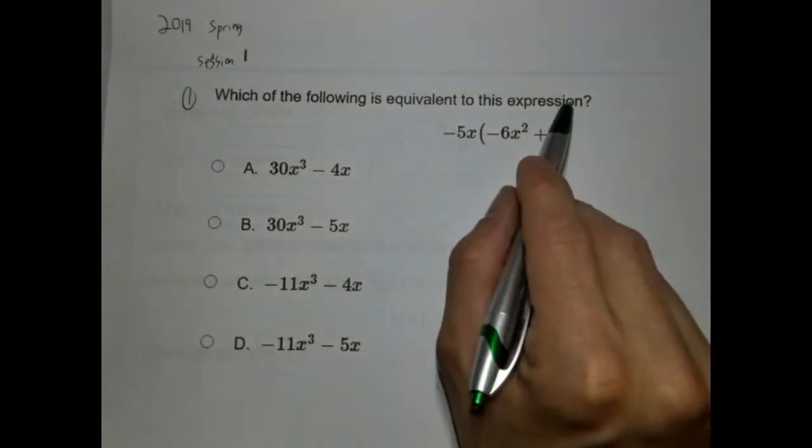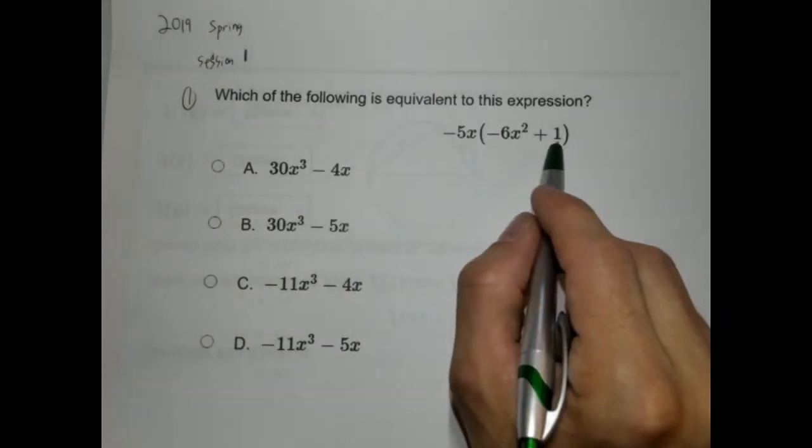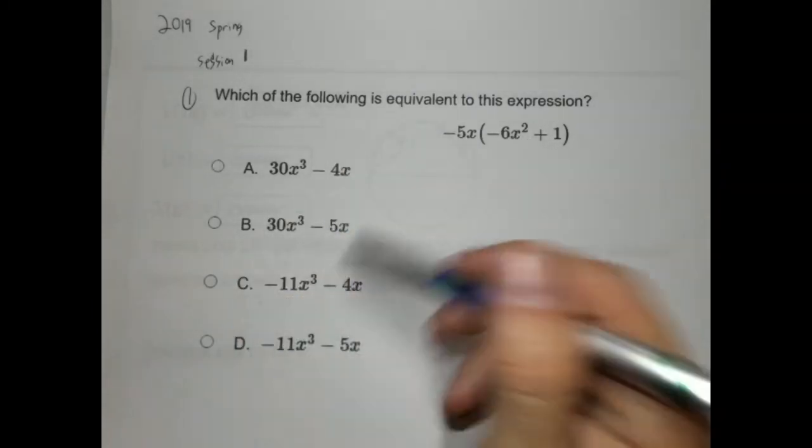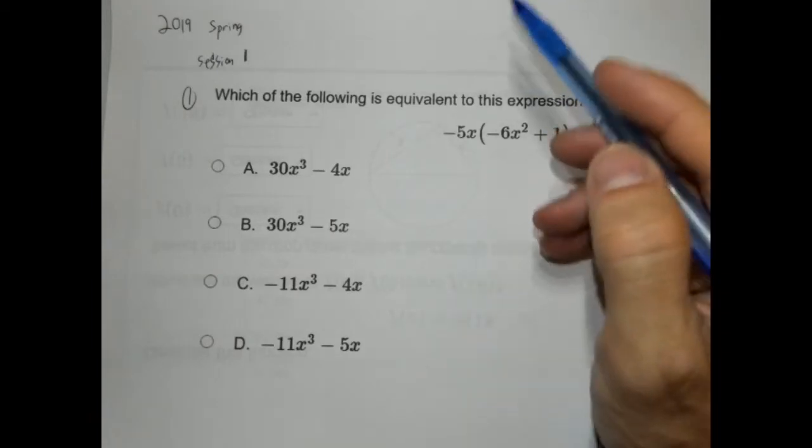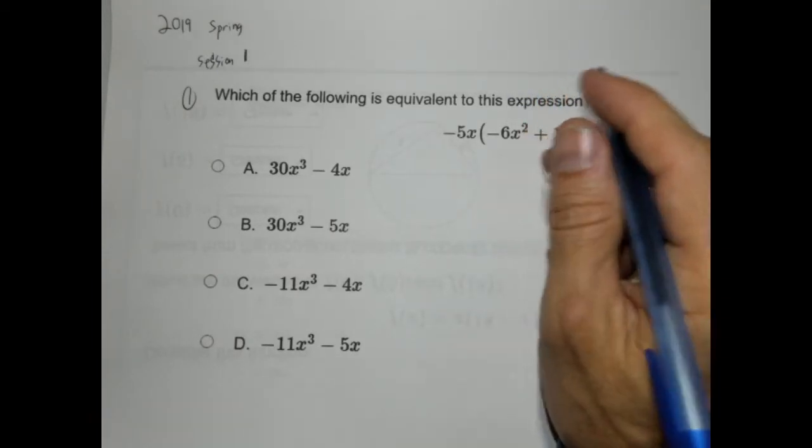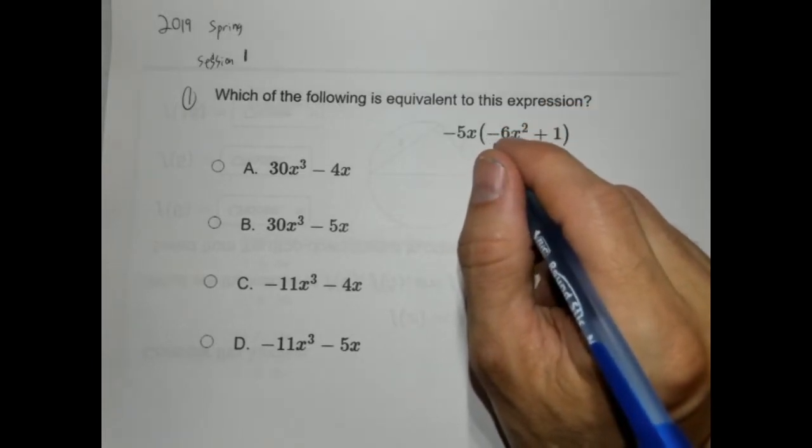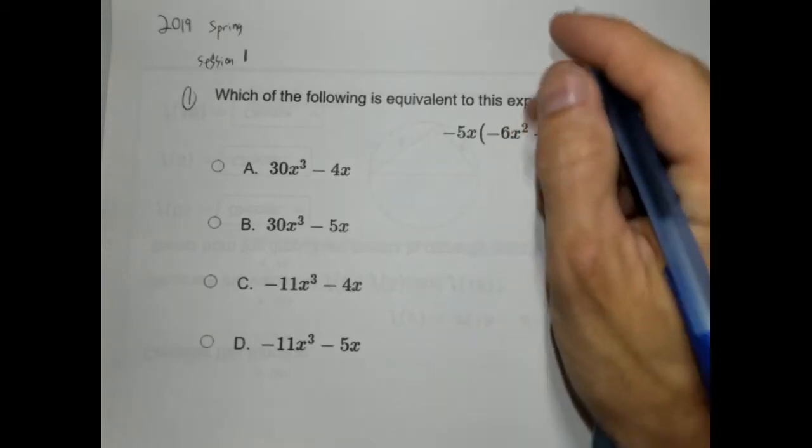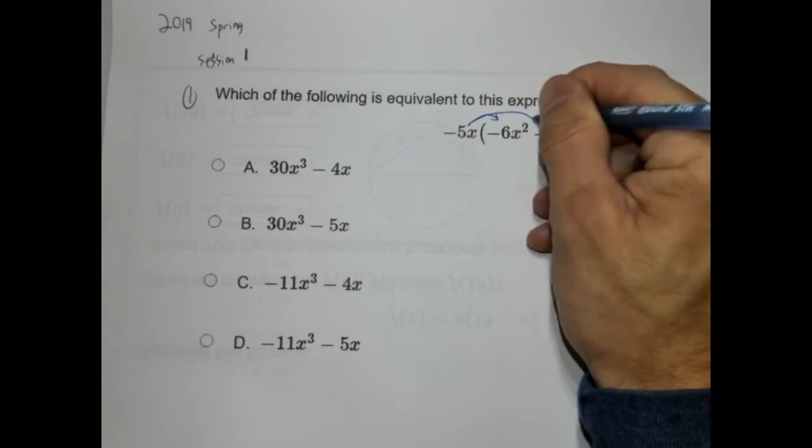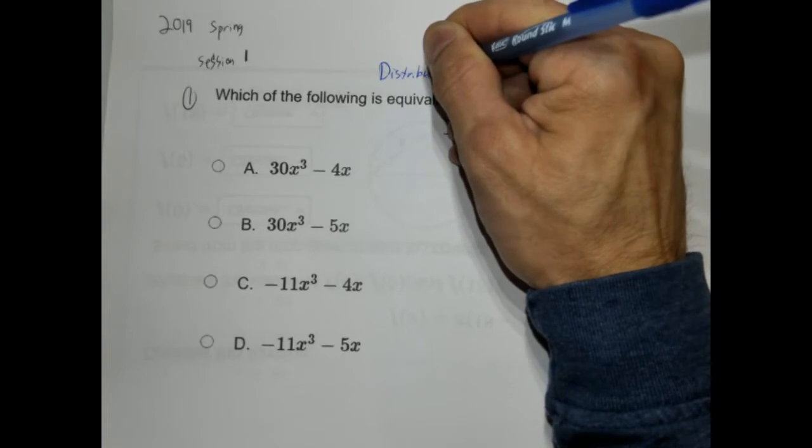So which of the following is equivalent to this expression? They give us here, we have -5x(-6x² + 1), so we have a monomial times a binomial. They give us four options. One of the things you really need to be doing when you're taking this MCAS is using that piece of scrap paper they give you, because this would be so much easier if you could write down on this. But alas, you're forced to take it over the computer, so just use the scrap paper. Here we're just going to distribute. This is really just testing our ability to know how to distribute.